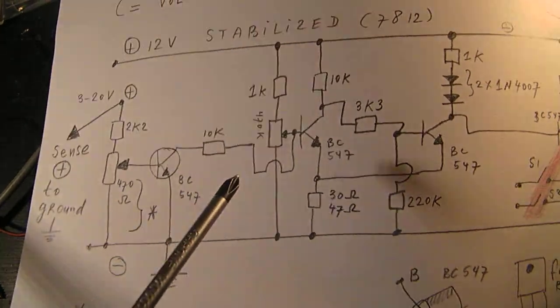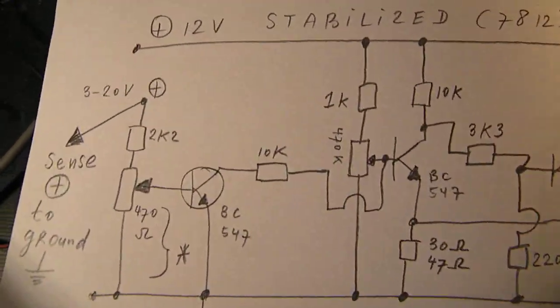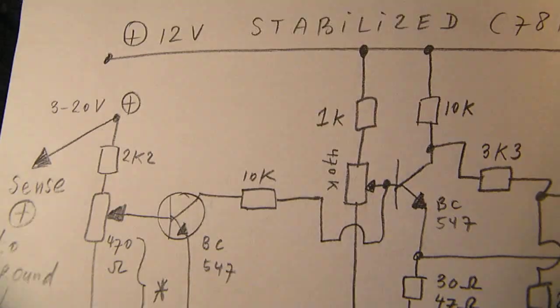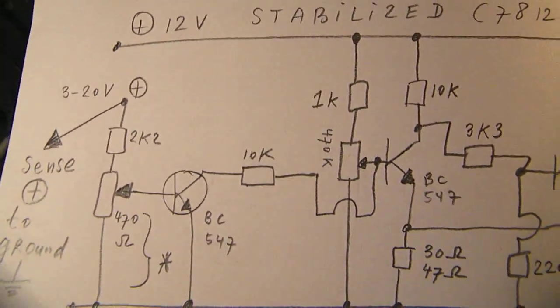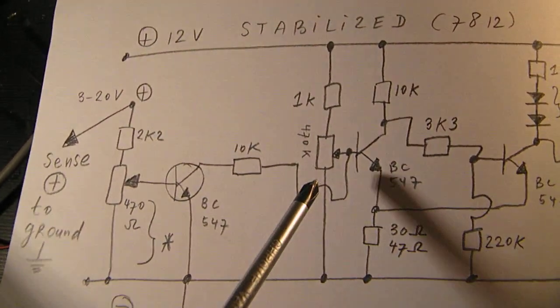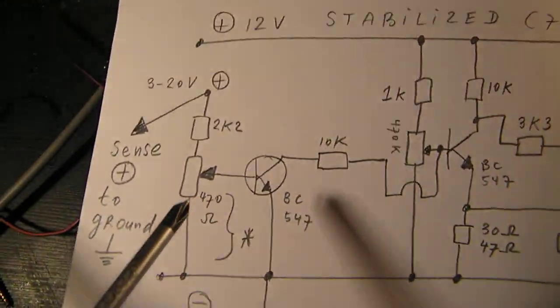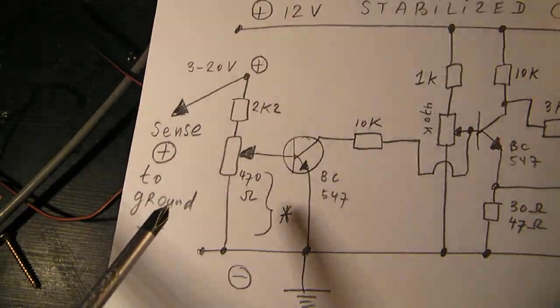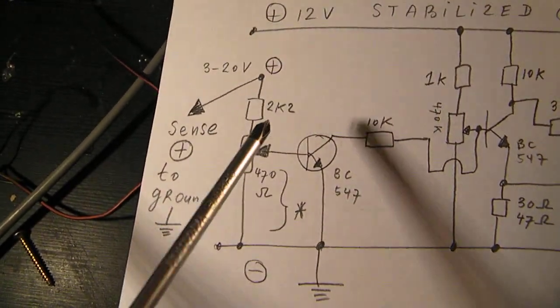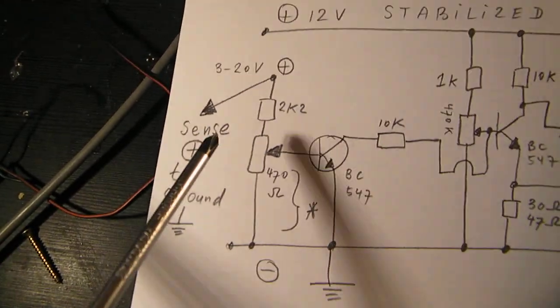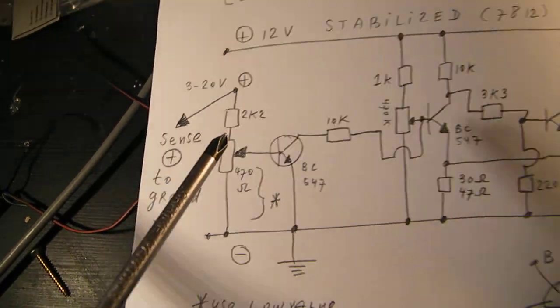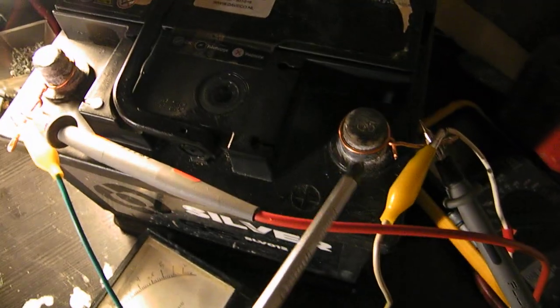You can set the switching point with the help of this potentiometer, about 170k. And that's very critical. Here you can connect the sense line, and that sense line in this case goes to the positive from the battery, the lead acid battery.